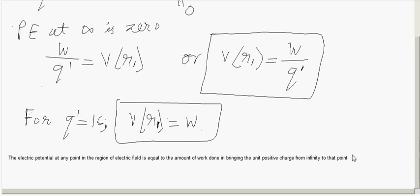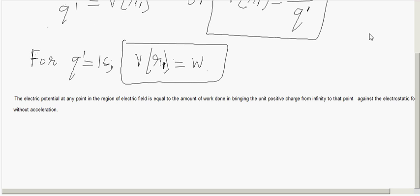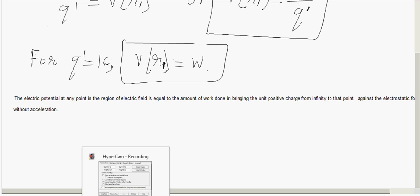The electric potential at any point in the region of the electric field is equal to the amount of work done in bringing the unit positive charge from infinity to that point against the electrostatic forces without acceleration. So electric potential is work done per unit charge, and the unit of electric potential is volts, which is also equal to joules per coulomb.